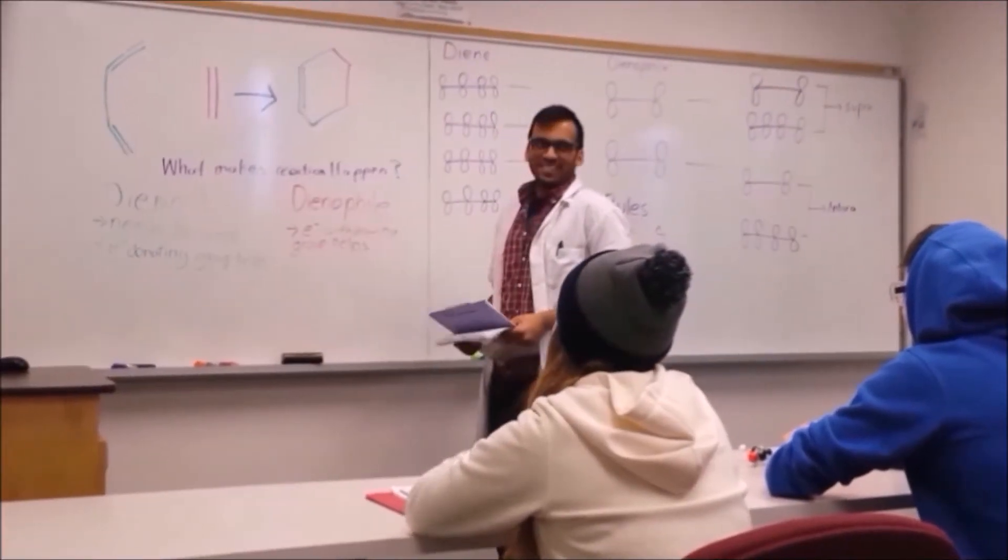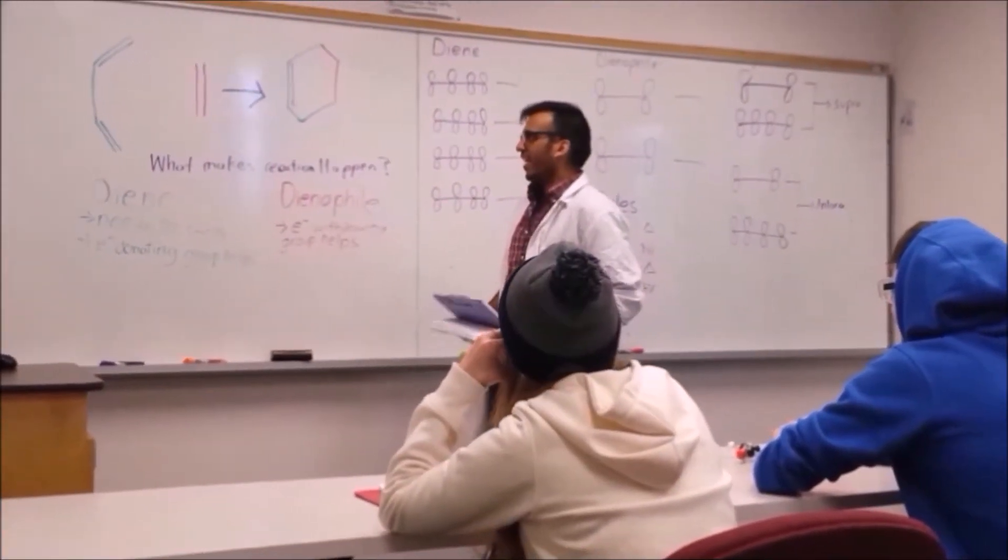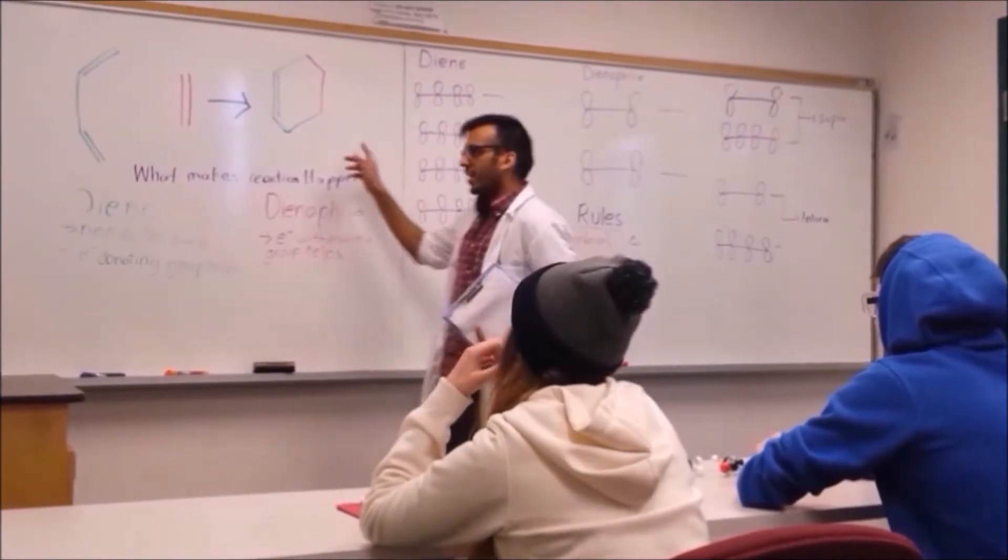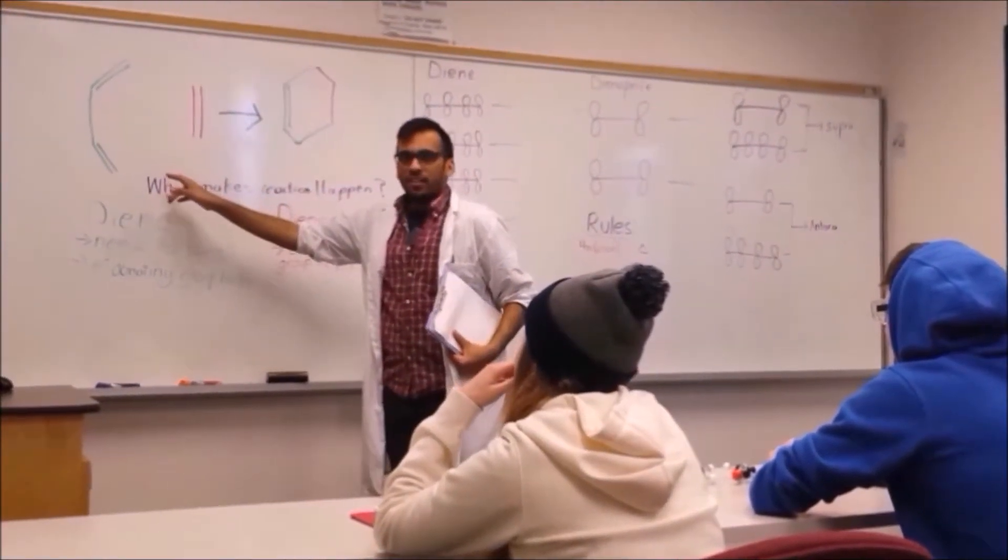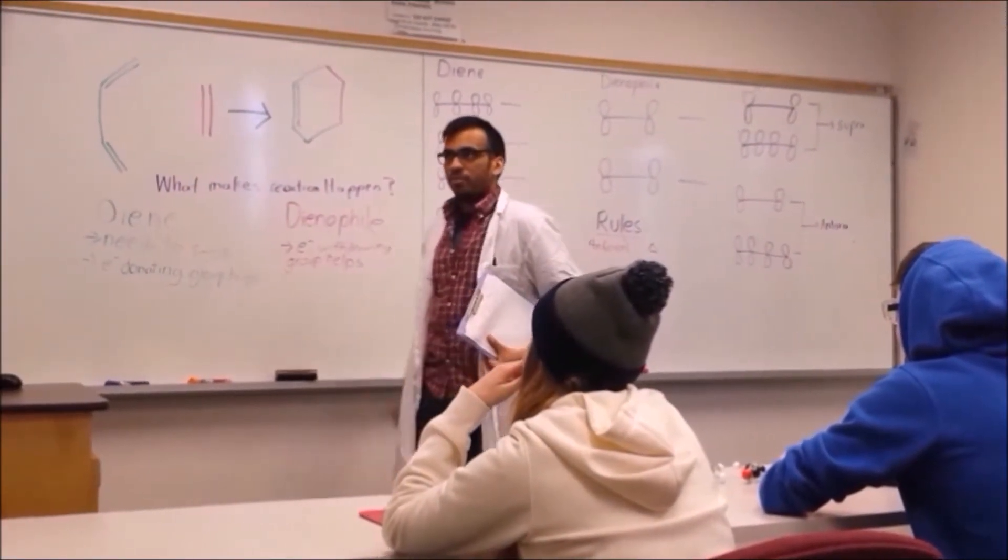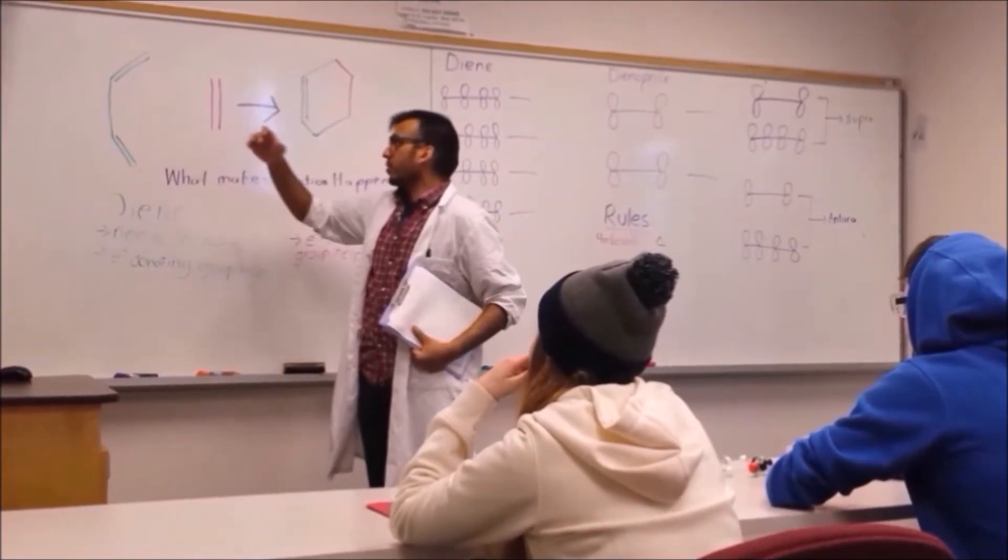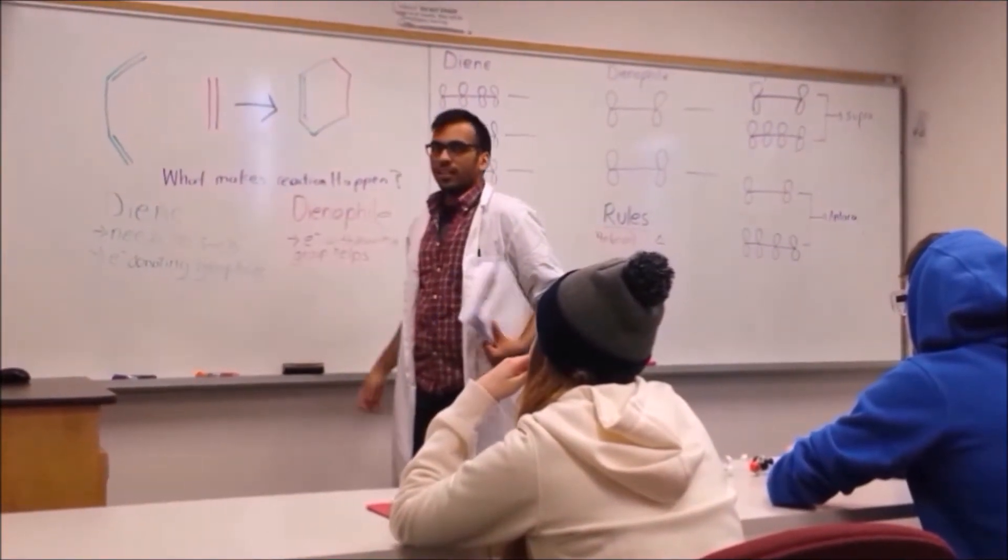Alright, so 4 plus 2 cycloaddition, you make a ring from a diene and a dienophile, and the 4 refers to the number of electrons on the diene, and the 2 refers to the number of electrons on the dienophile.